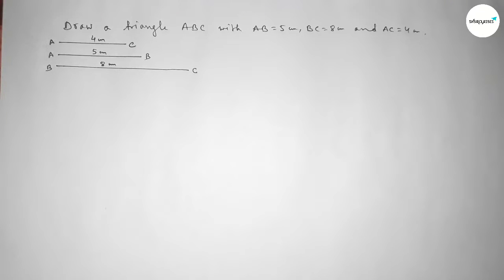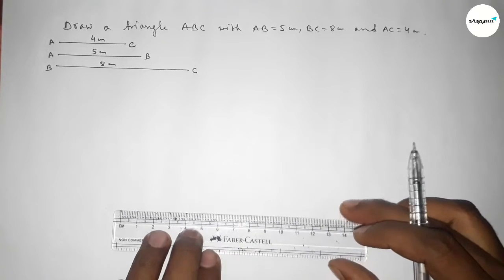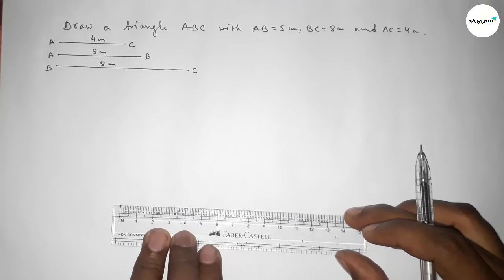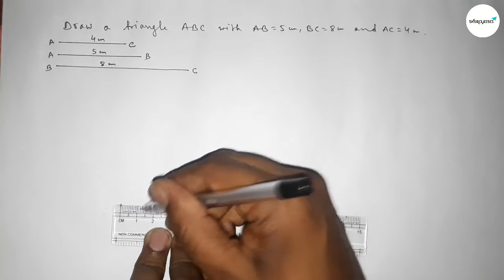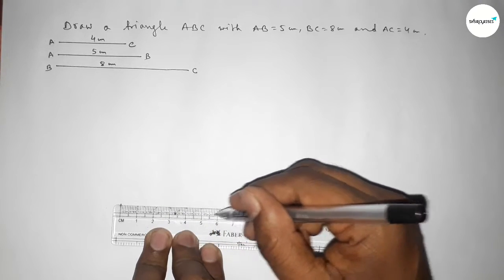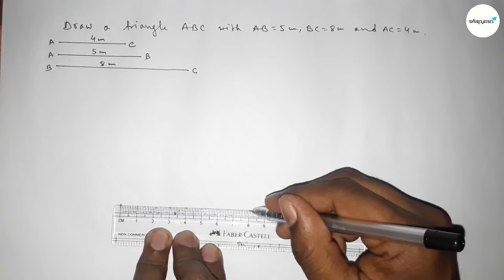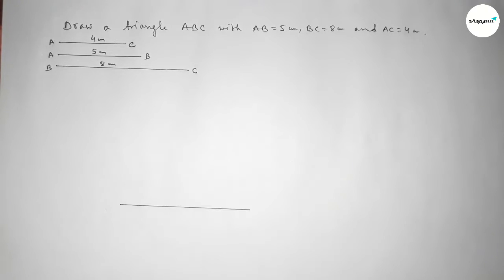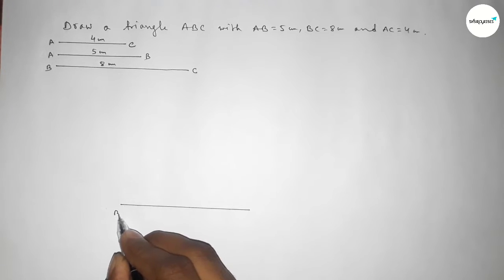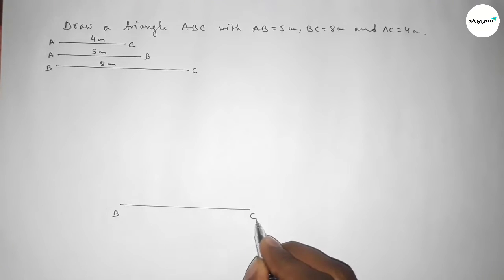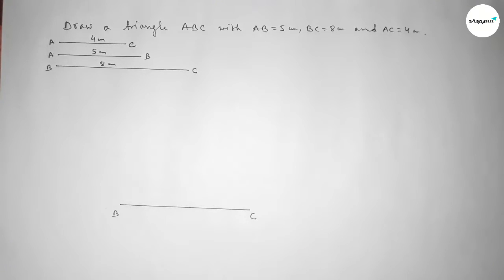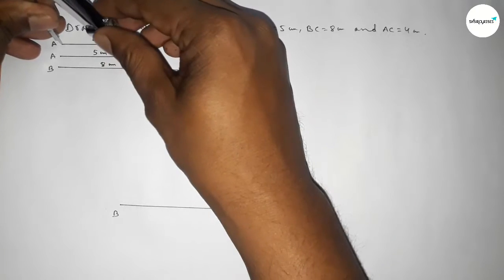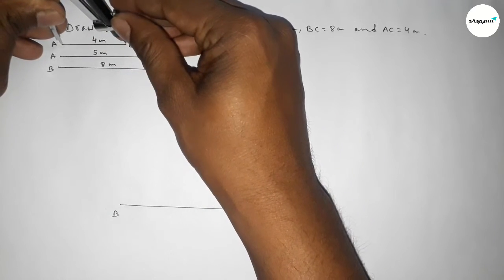Now we draw a line of length 8 centimeter. This is the 8 centimeter line, and we take point B here and point C here.